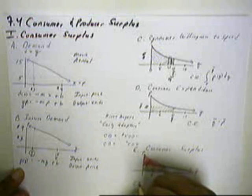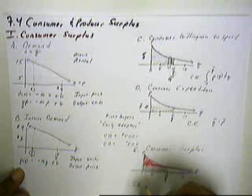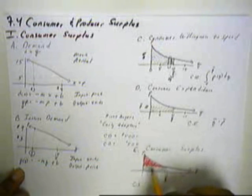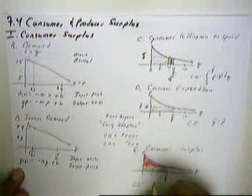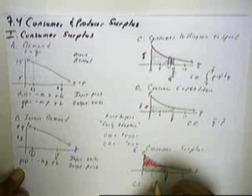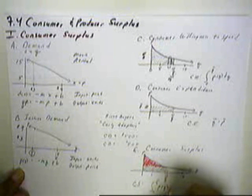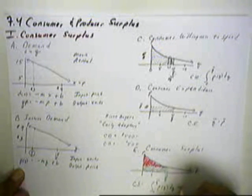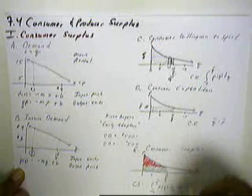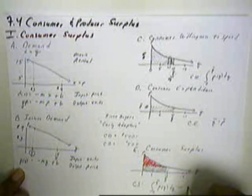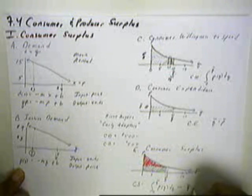What we call this is consumer surplus. And this is found by taking the complete area from this equation here, 0 to Q, P of Q, DQ, minus this smaller area right here, Q times P.